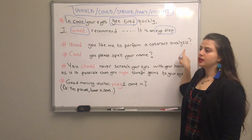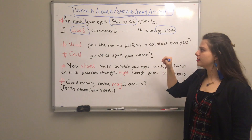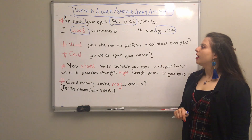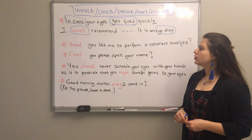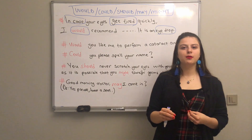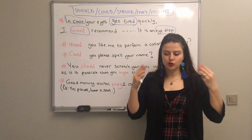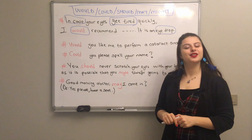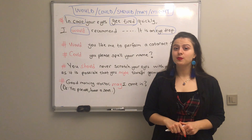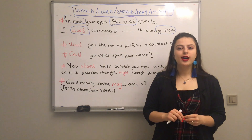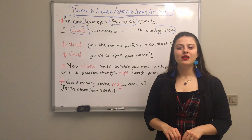'Would you like me to do something?' — you can use 'would' to understand people's preferences. For example, 'Would you like a coffee?' is the classic example. If you have questions, please let me know. You will find extra activities and practice materials at the end of the video.